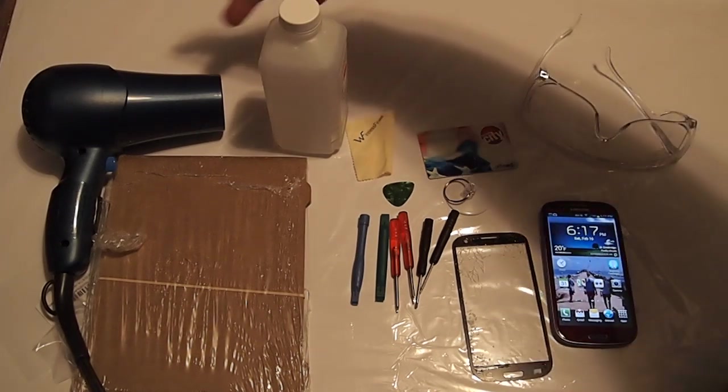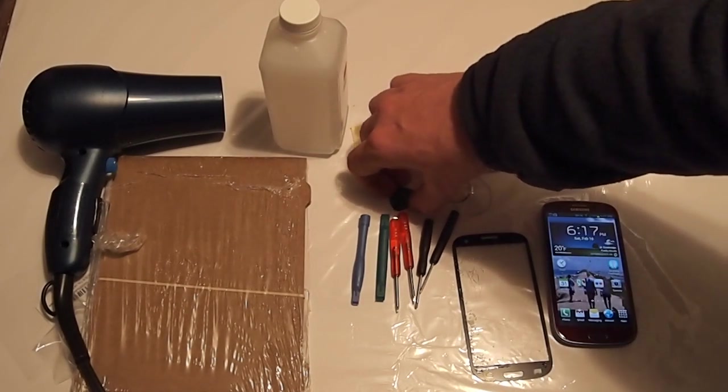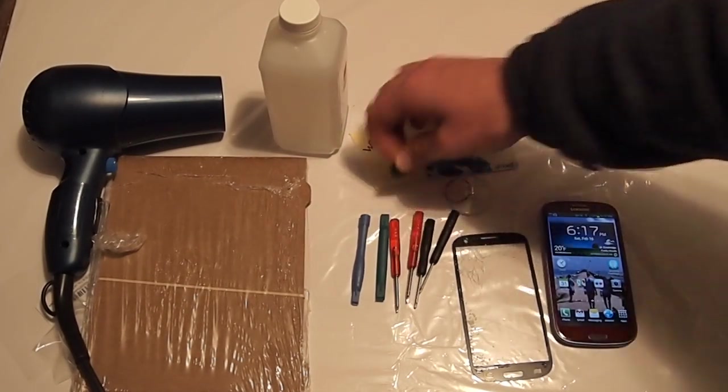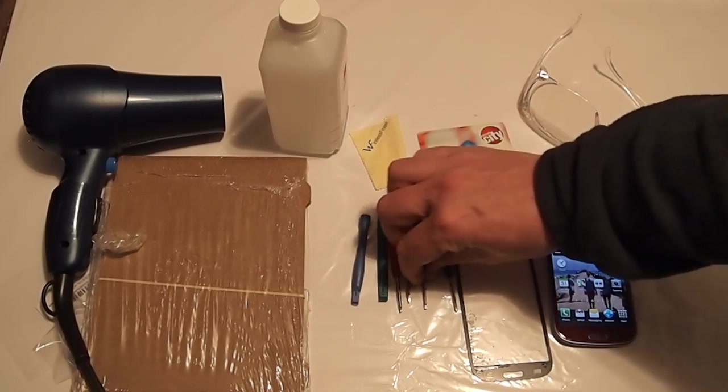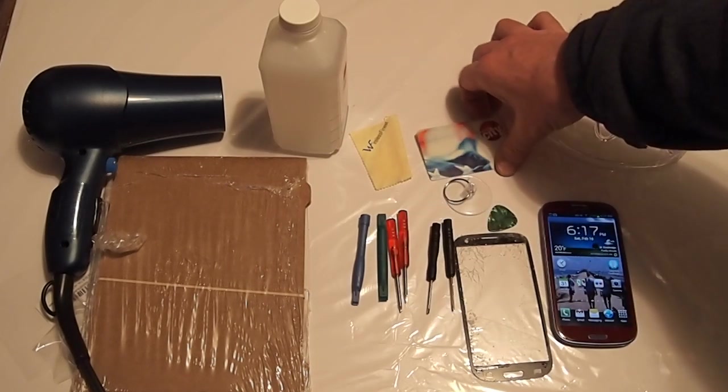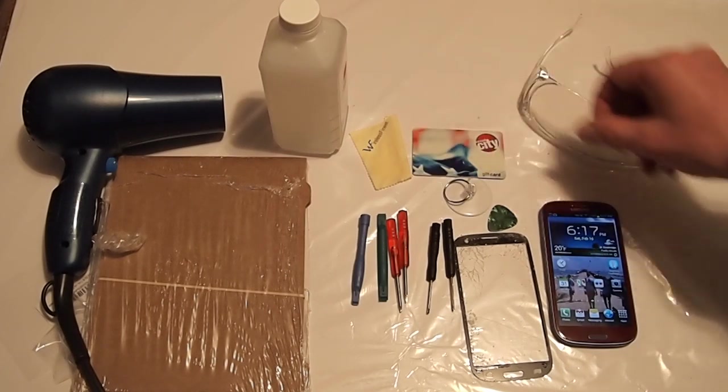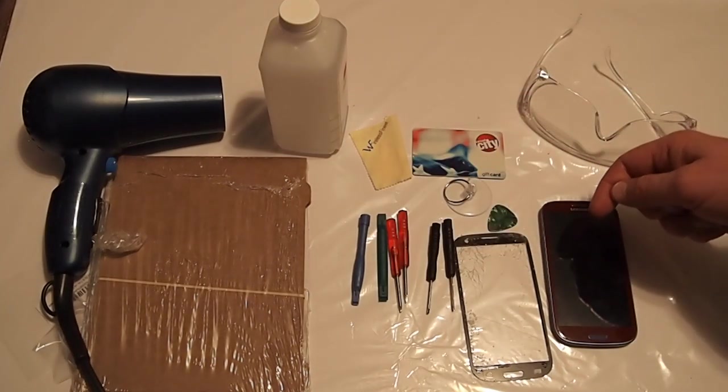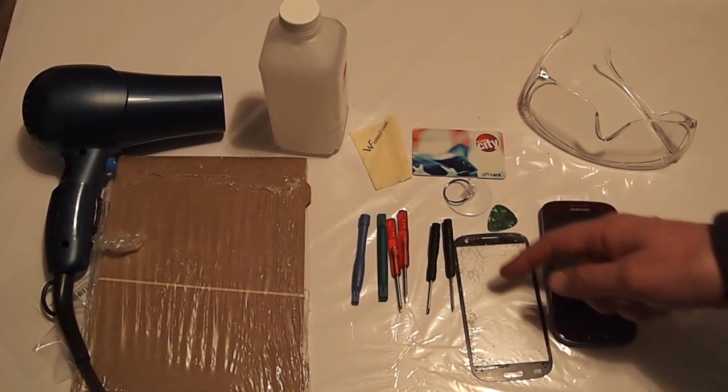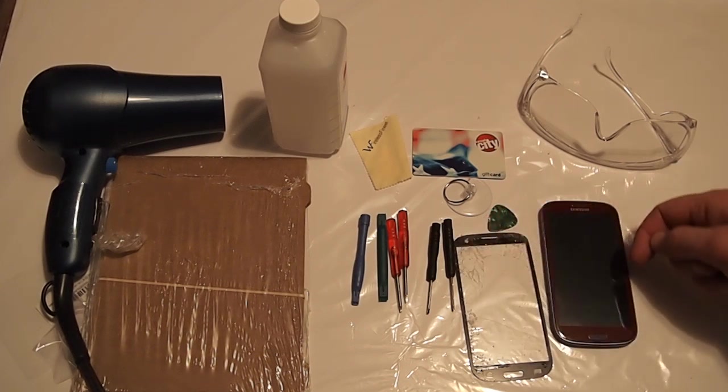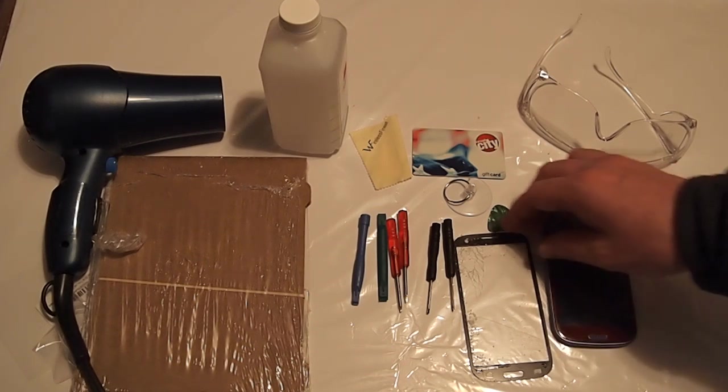I used the straight screwdriver that came with the kit of tools, and then finally found a use for my Circuit City gift card to get in there and wedge it under the screen. I used the heat to soften up the adhesive and got the screen replaced.